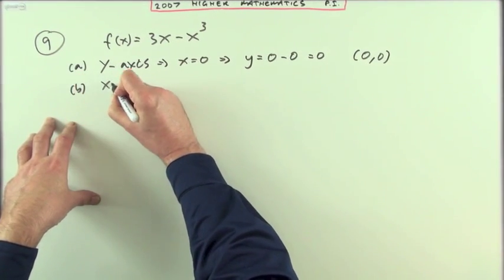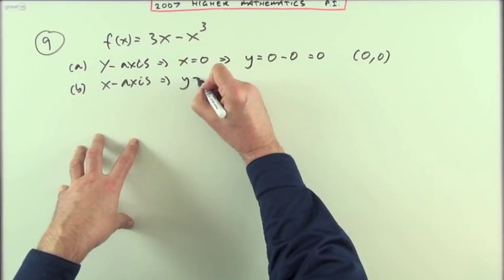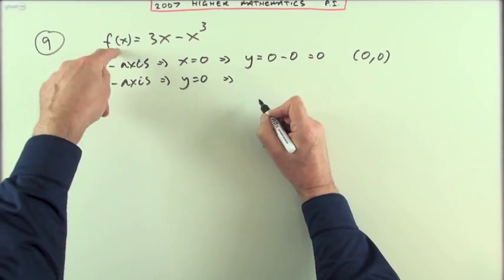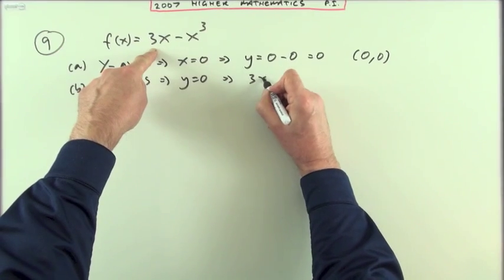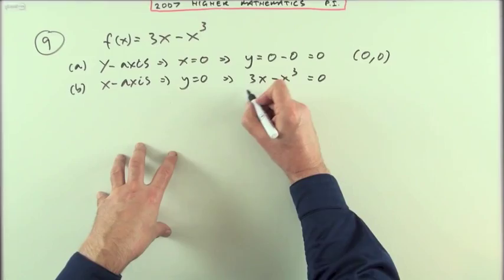B, x axis. If you're on the x axis you've got no height. Then y should be 0. Summating y equals 0, I've got this. 3x minus x cubed equals 0. Take out an x.